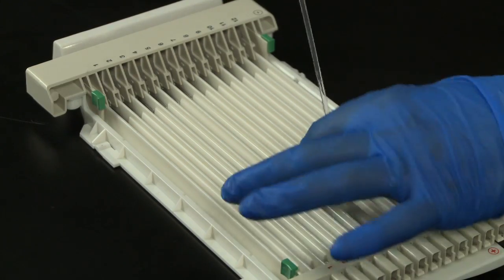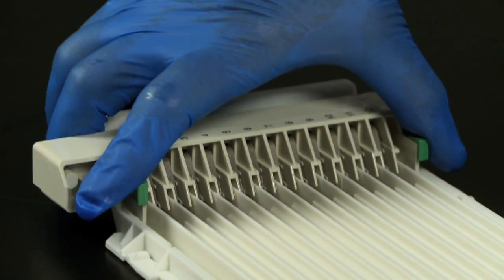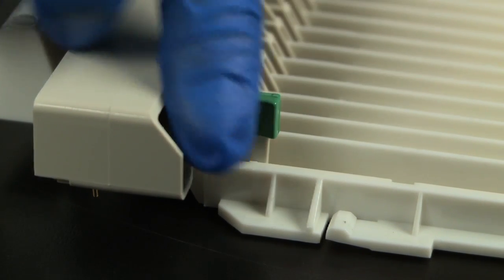Remove the IPG strips. The electrodes can be removed from the tray by pinching the green tabs and lifting up.